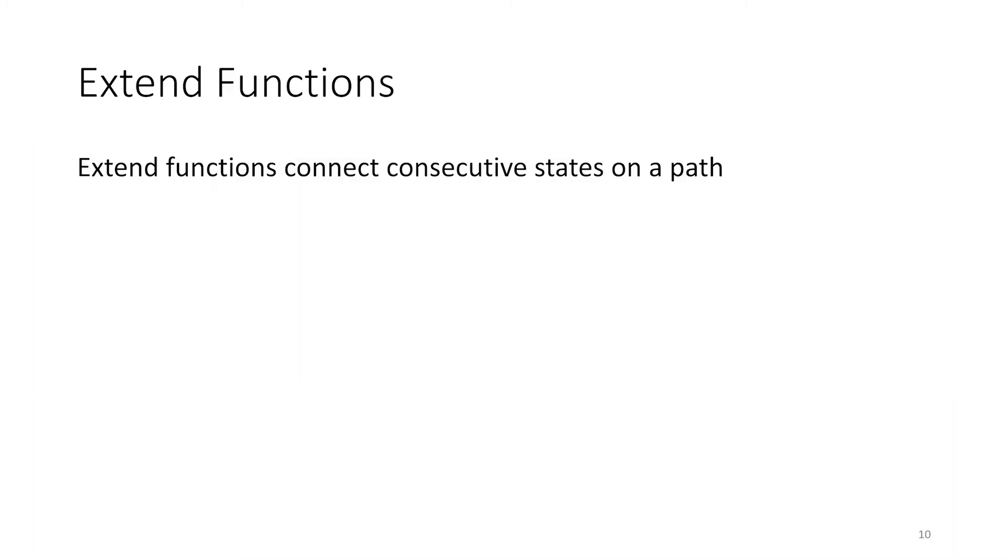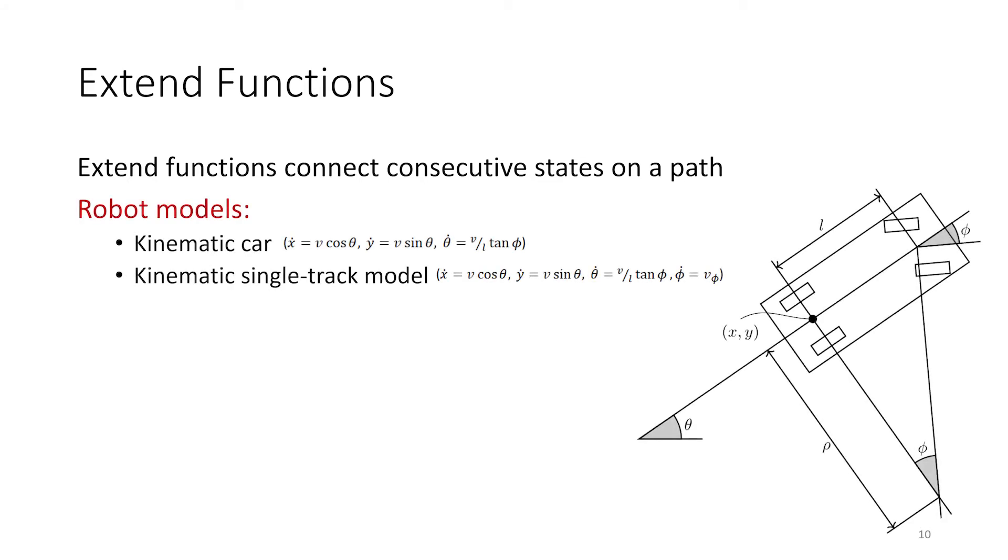Extend functions are used by sampling-based planners to connect consecutive states on a path. We support robot dynamics models for a kinematic car and a kinematic single-track model that account for a two-dimensional position plus yaw angle of the robot.